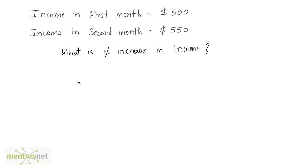Let us solve a question. The income in the first month is $500, and this income is increased in the second month to $550. This question is asking you to calculate the percentage increase in income — how much percent the first month's income increased to get the second month's income.